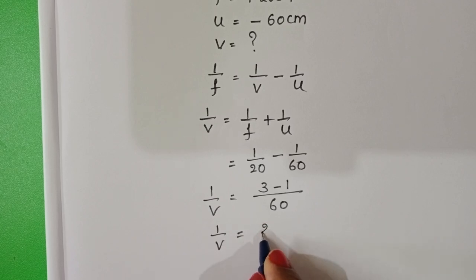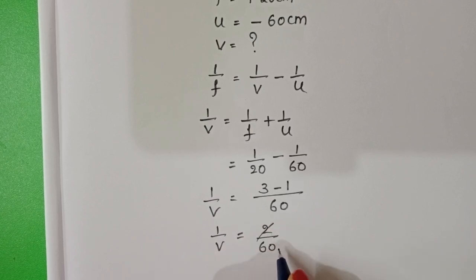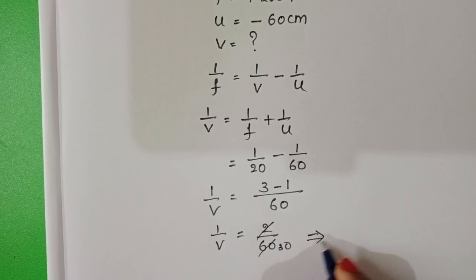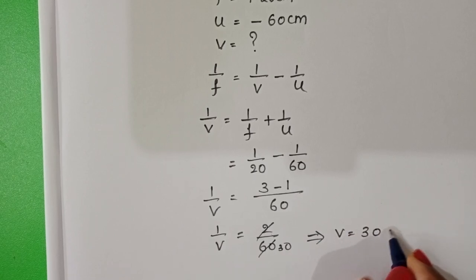1/V equals 2/60, which equals 1/30. So image distance equals 30 cm.